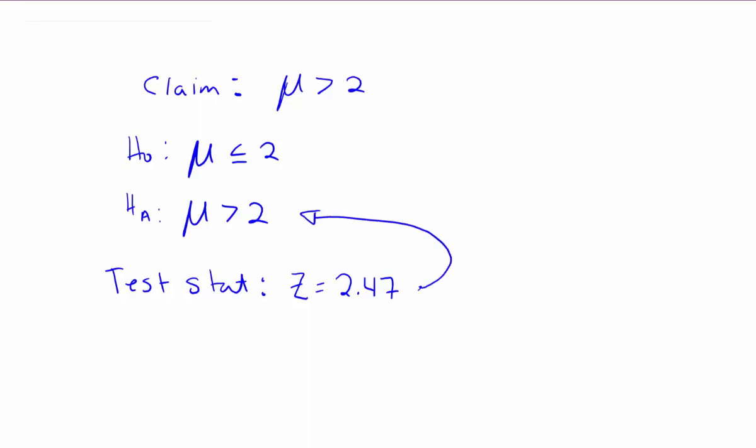The reason we look at the alternative hypothesis here is because this hypothesis tells us what kind of test we're conducting, and that becomes very important when trying to find the p-value.